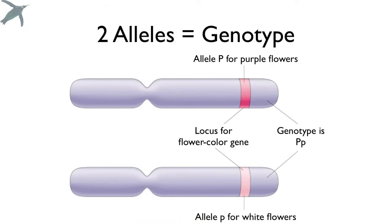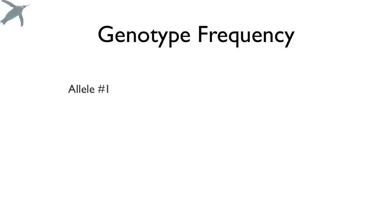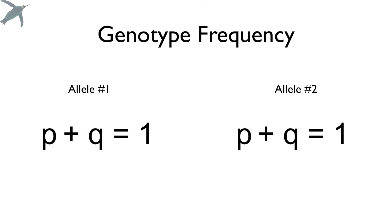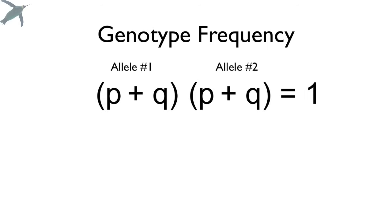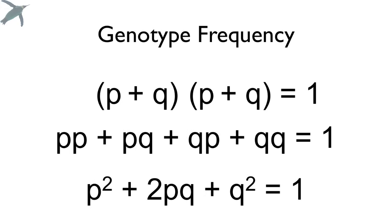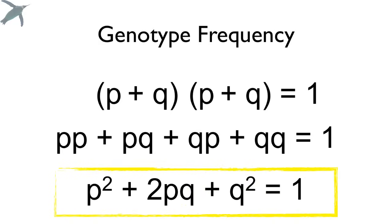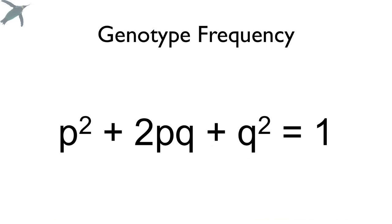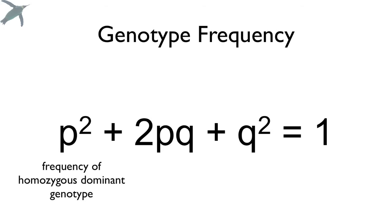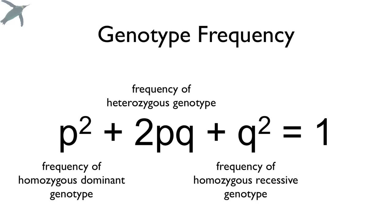A genotype is two alleles. So if you're interested in genotype frequency, you have allele 1 (P + Q = 1) and allele 2 (P + Q = 1). A genotype is allele 1 and allele 2 — that means multiply. Using the FOIL rule, you get P² + 2PQ + Q² = 1. This is the key equation for Hardy-Weinberg equilibrium: P² is the frequency of the homozygous dominant genotype, 2PQ is the frequency of the heterozygous genotype, and Q² is the frequency of the homozygous recessive genotype.